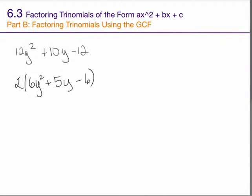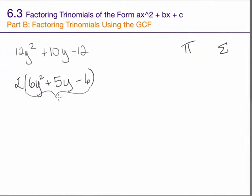Let's note our product and sum from here. We've already done part of the job of factoring this trinomial by factoring out this 2, so we just need to factor what's left. But because 2 is a factor, it's going to remain a factor in each of the next several steps as well.